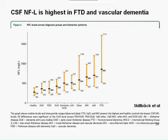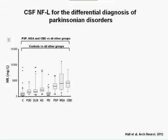Looking across neurodegenerative diseases in a study by Tobias Gilbeck in our group, the Alzheimer's disease concentrations are not that impressive compared to other neurodegenerative diseases. In this cross-dementia disease examination, frontotemporal dementia and vascular dementia are the diseases with the highest CSF neurofilament light concentrations. AD is statistically higher, but not as pronounced as for vascular dementia or frontotemporal dementia.